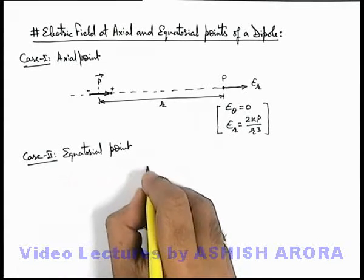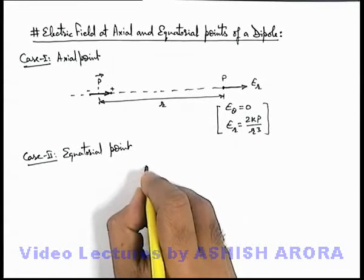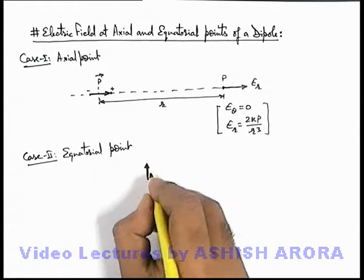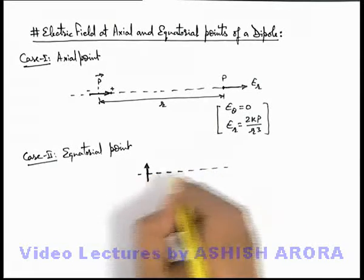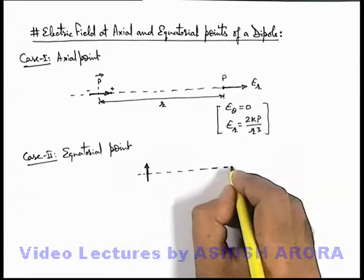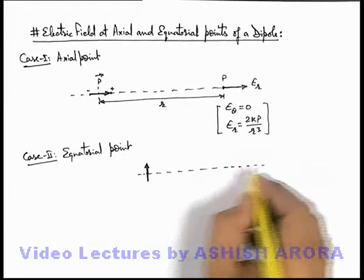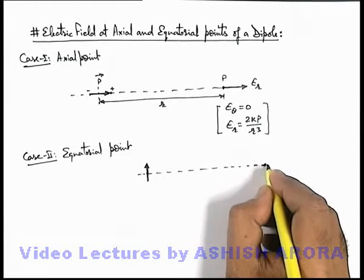For this situation, say we are given a dipole like this. And on its equator, that is the line perpendicular to the axis and passing through the center, this is called equator of dipole.